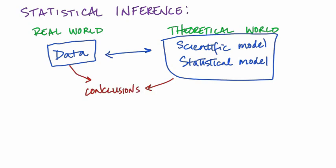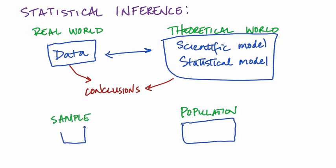How strong or how broad these conclusions can be depends on how our data were collected. Now, these conclusions could be about parameters in our models, or when our data were collected as a sample from a population, the conclusions could be about the population based on our sample. We're now going to start learning about using statistical tests in order to answer specific questions about the values of our population or theoretical world parameters.